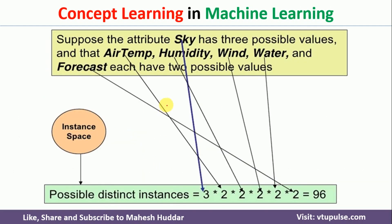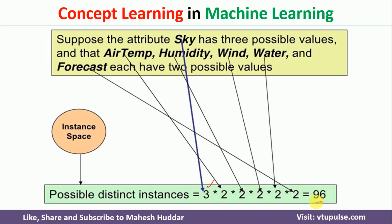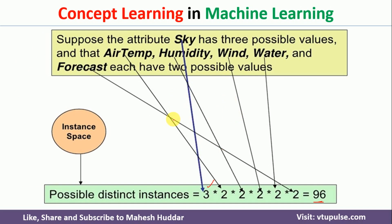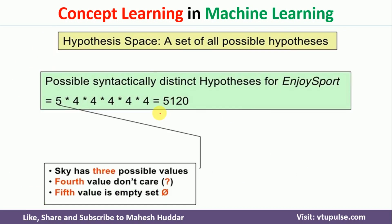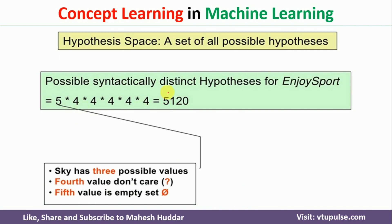Similarly, we apply this to our main example. Sky has 3 possibilities; air temperature, humidity, wind, water and forecast each have 2. So the total number of instances is 3 × 2 × 2 × 2 × 2 × 2 = 96. It is not practical to write out all 96, which is why I used the simpler example to illustrate. For the hypothesis space, adding question mark and null (i.e., adding 2 to each attribute's count) gives 5 × 4 × 4 × 4 × 4 × 4 = 5120 possible hypotheses. If you consider the distinct hypotheses and calculate, you will get 973 — try it yourself.